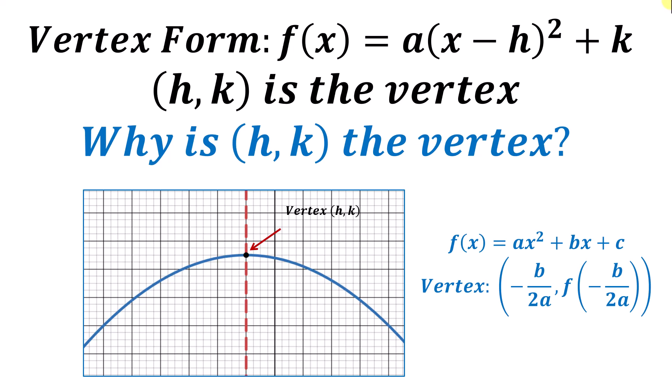Recall if a is negative, the parabola opens down as pictured below, and the vertex is the highest point on the graph. And if a is positive, the parabola opens up, and the vertex is the lowest point on the graph.